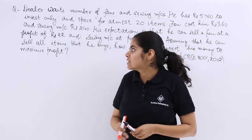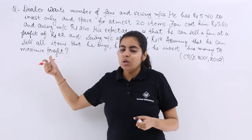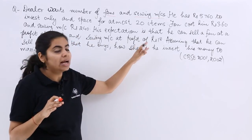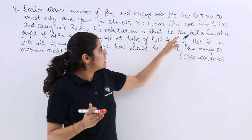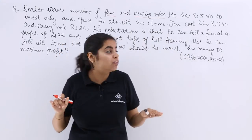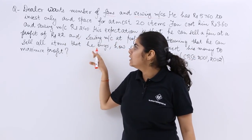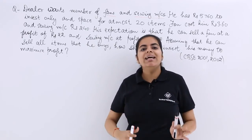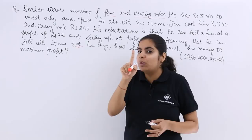A fan costs the dealer Rs. 360 and a sewing machine costs Rs. 240. His expectations — and this wording is important because it defines the objective function — are that he can sell a fan at a profit of Rs. 22 and a sewing machine at a profit of Rs. 18. Assuming he can sell all items he buys, that condition will give us one more equation.